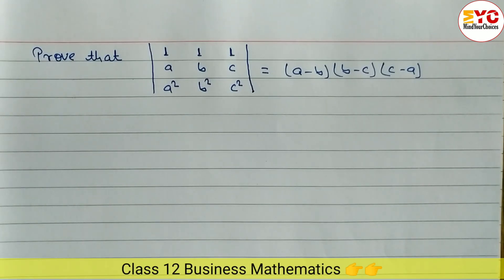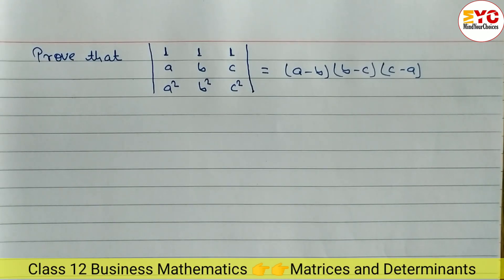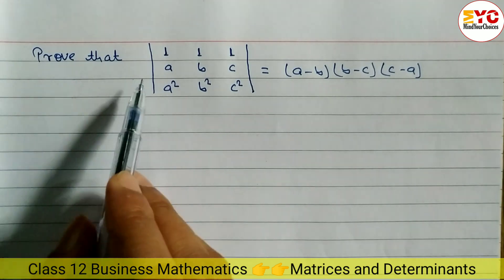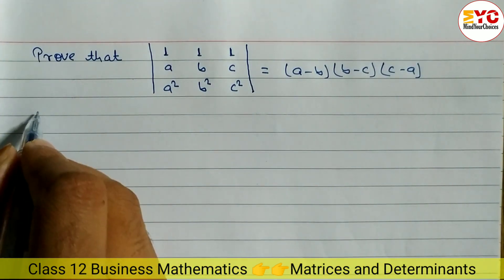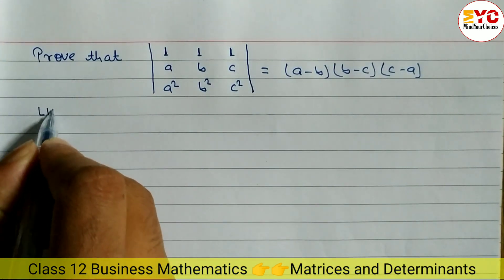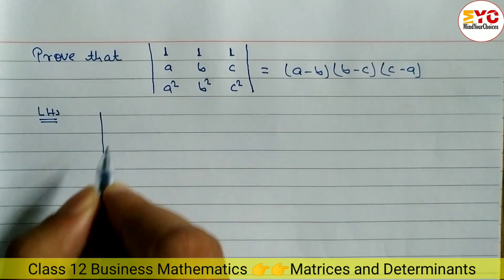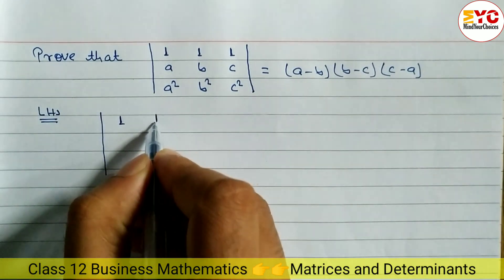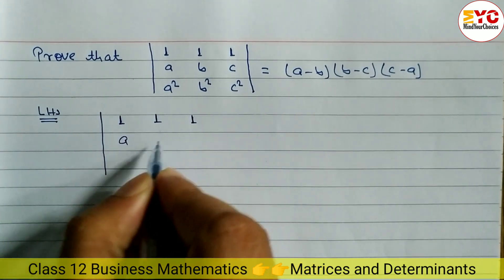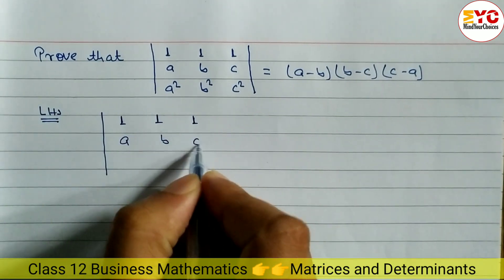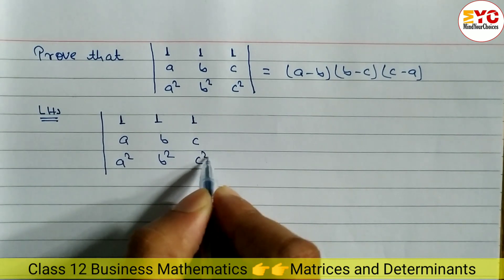Hello everyone. This question is taken from class 12 business mathematics. We have to prove that this determinant is equal to this. Let's take a start. We have to find out the value of the determinant, which is: 1, 1, 1; A, B, C; A square, B square, C square.